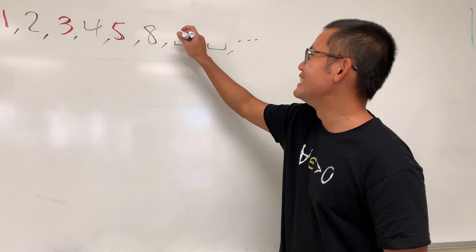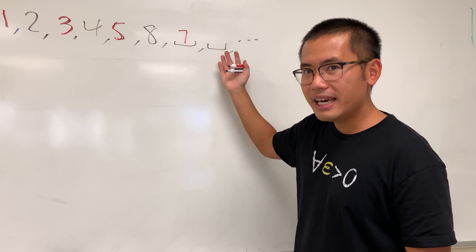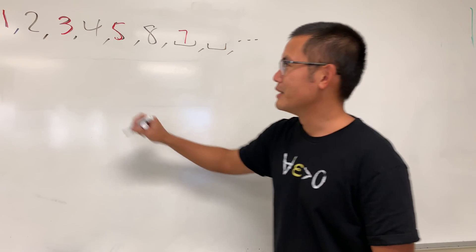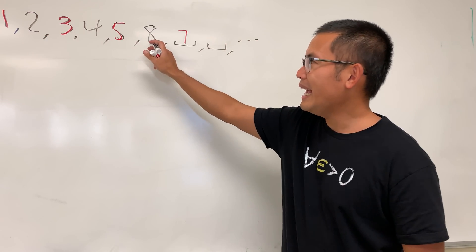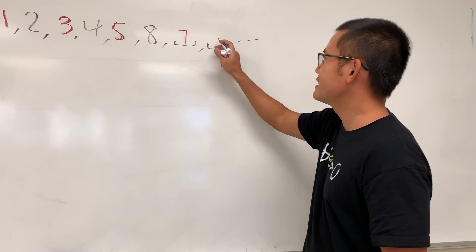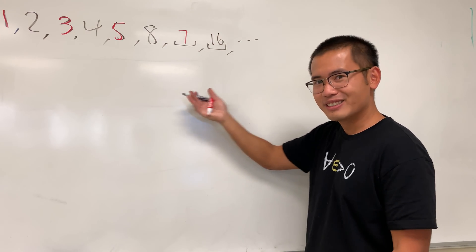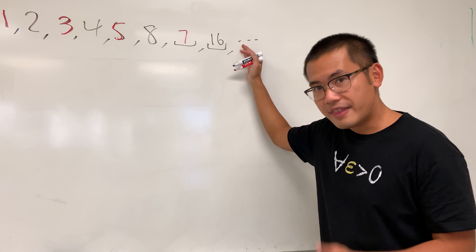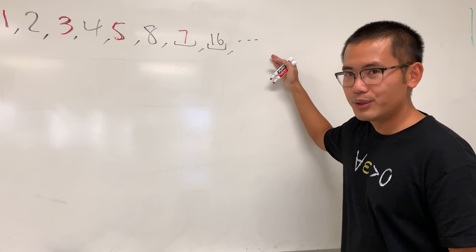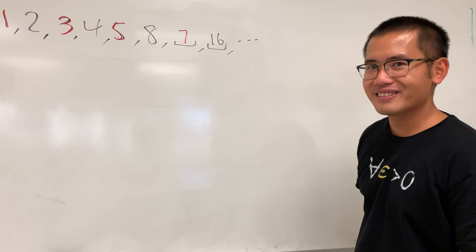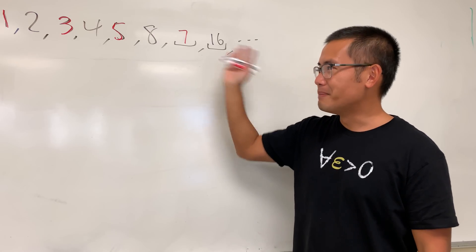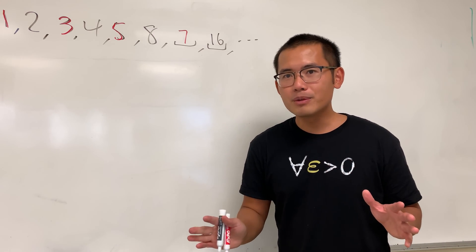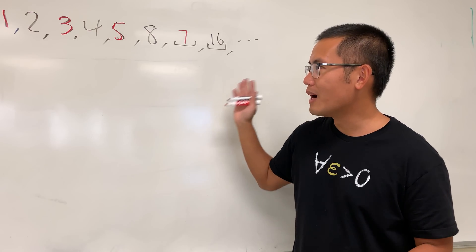Yes — 7. And the one following that is: 2, 4, 8, 16 — like this. So the next ones would be 9 and then 32, and so on. That's the pattern for this sequence. Now I'm going to show you how to write a formula for this — first a piecewise formula, and then how to merge the piecewise formula into just one formula.